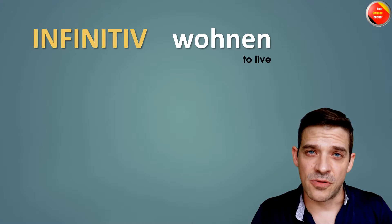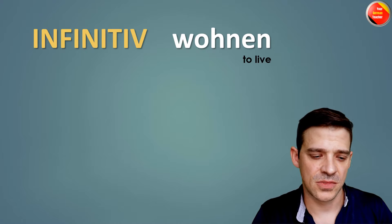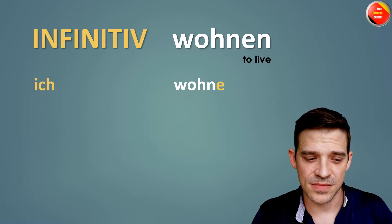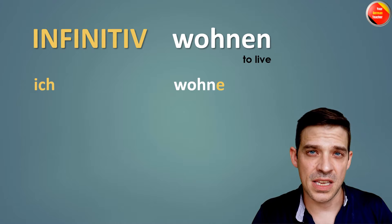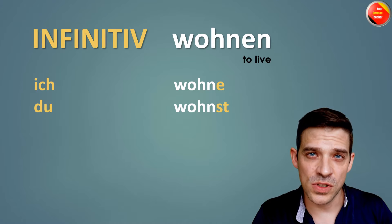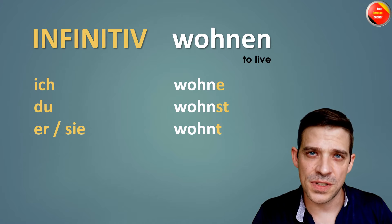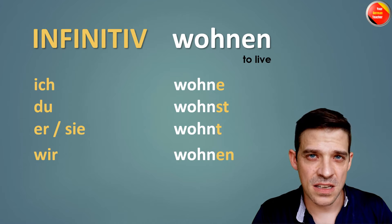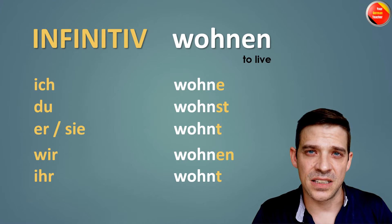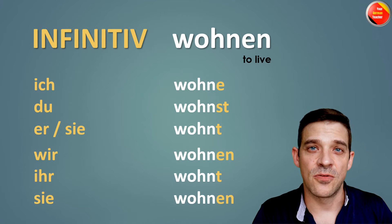Another regular verb is 'wohnen'. Wohnen means 'to live' in English. Ich wohne. Again you have 'wohnen', the base 'wohn', and you add '-e': Ich wohne. Du wohnst. Er oder sie wohnt. Wir wohnen. Ihr wohnt. Und Sie wohnen.